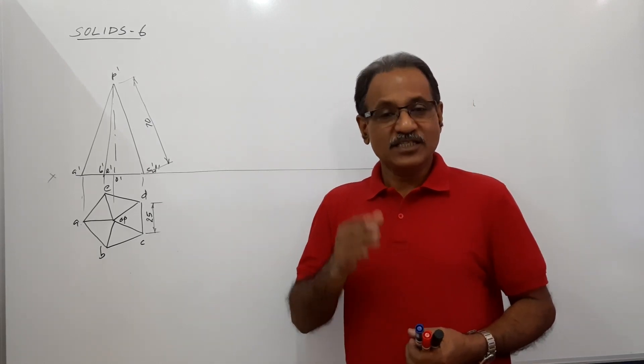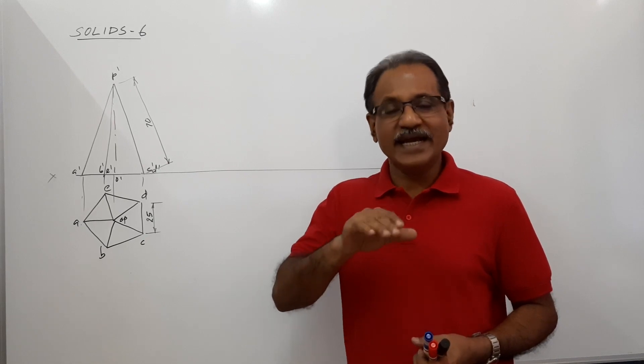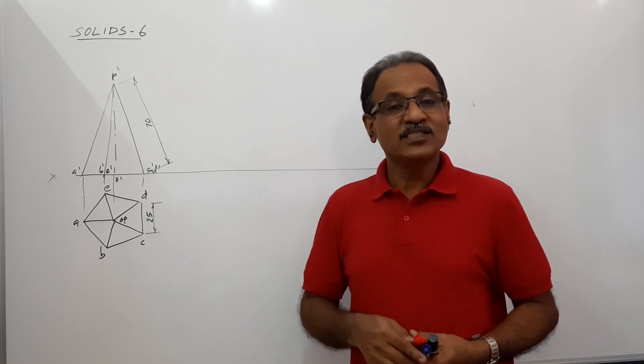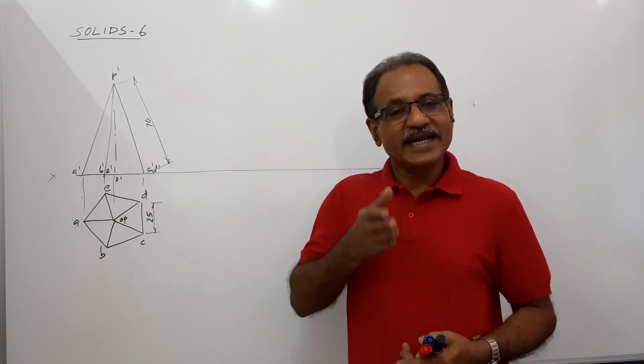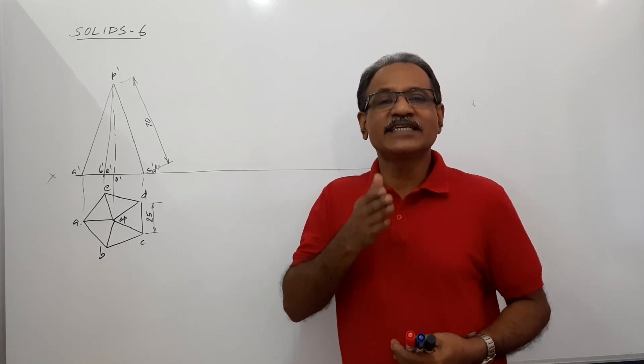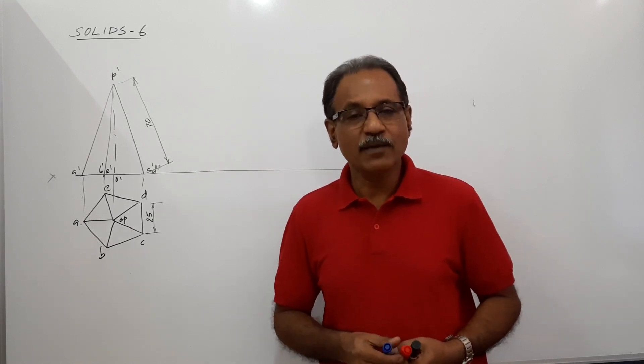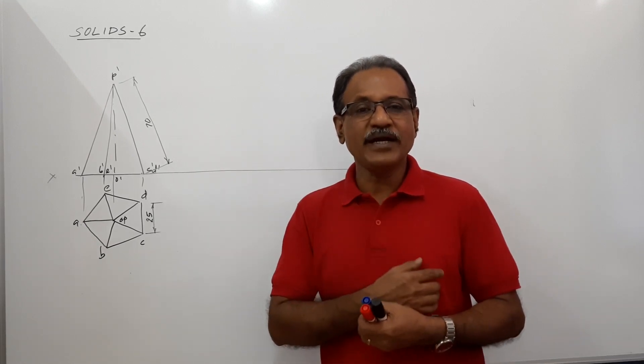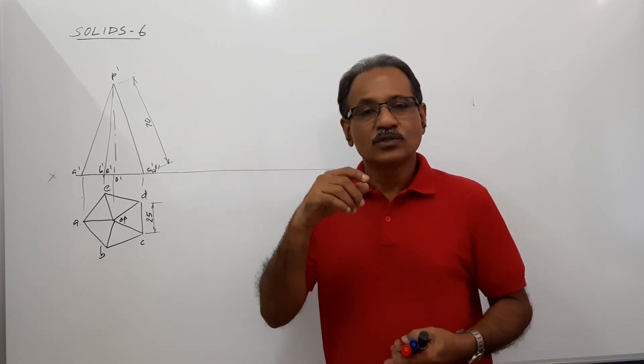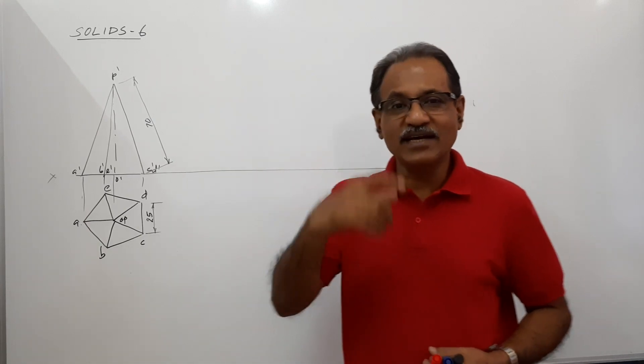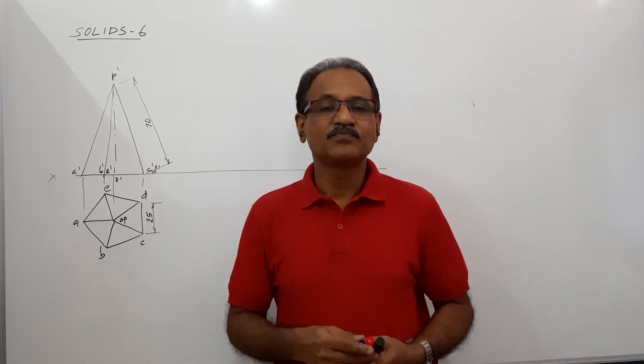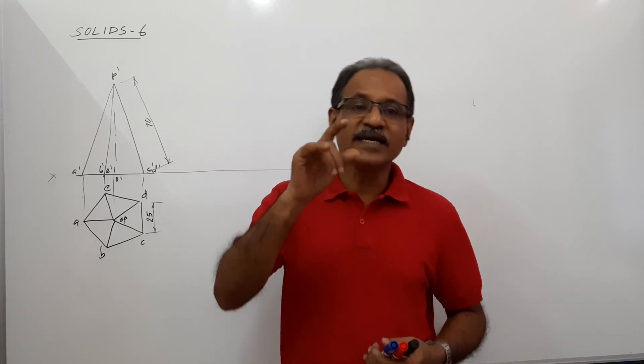The pyramid is resting on a side of base, in such a way that the triangular face containing this edge is perpendicular to both HP and VP. I repeat, a pentagonal pyramid, say 25mm side and 70mm slant height. Axis length is not given, slant height is given.